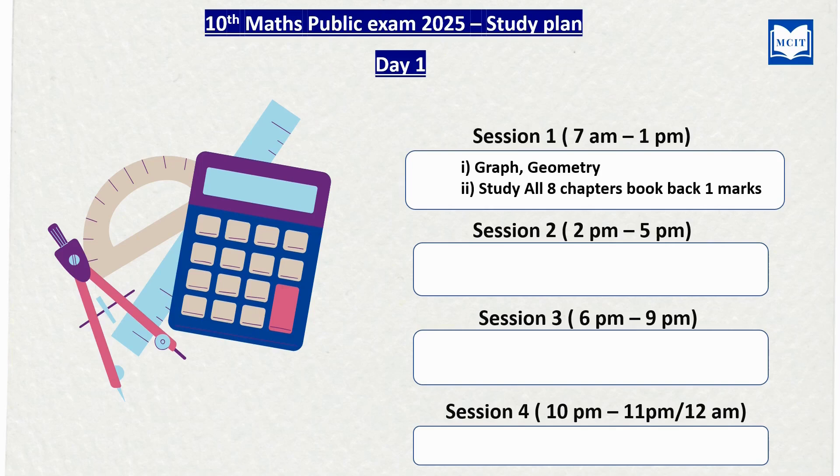In Session 1, it is important to learn all the graph and geometry topics — that is very important. After that, you can learn all the book-back 1-mark questions. That is very essential. This is the end of Session 1. If you score well in graph and geometry, you will have a good mark score, so we will cover it first.